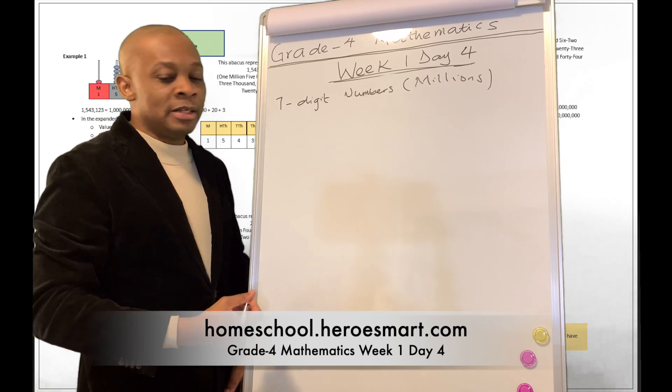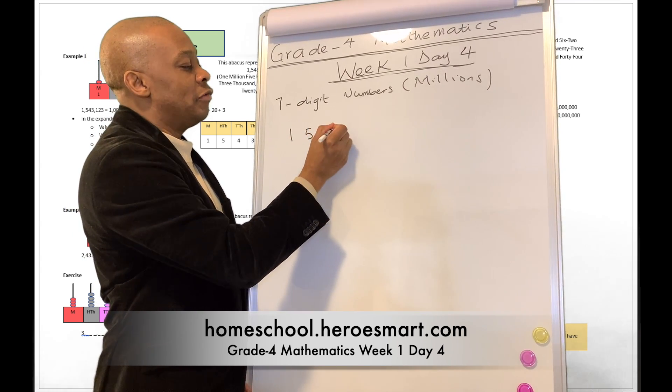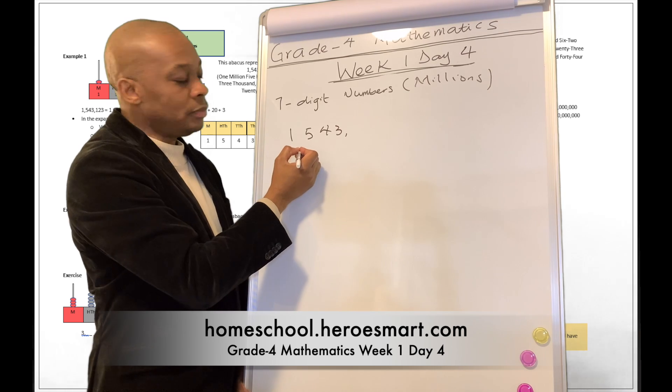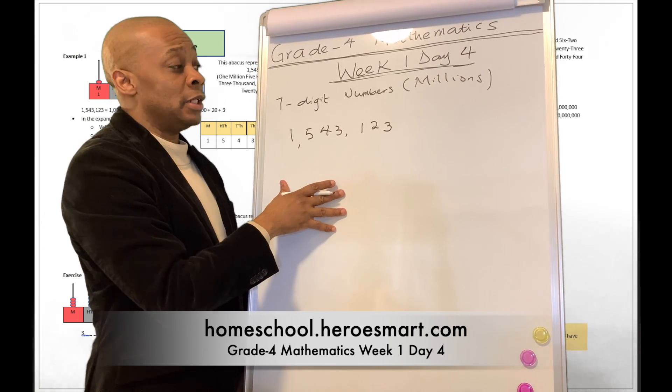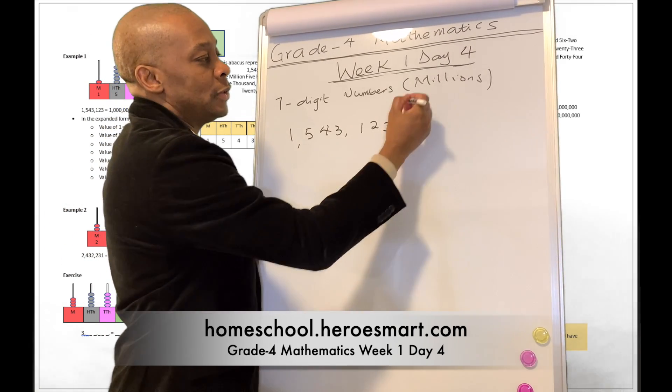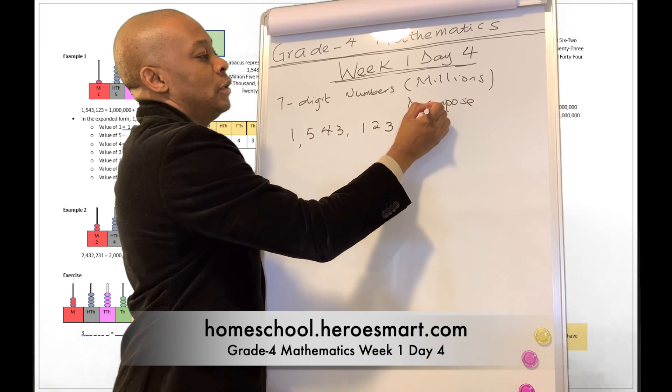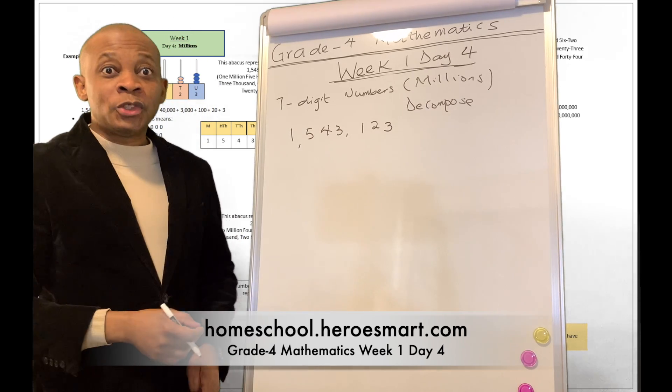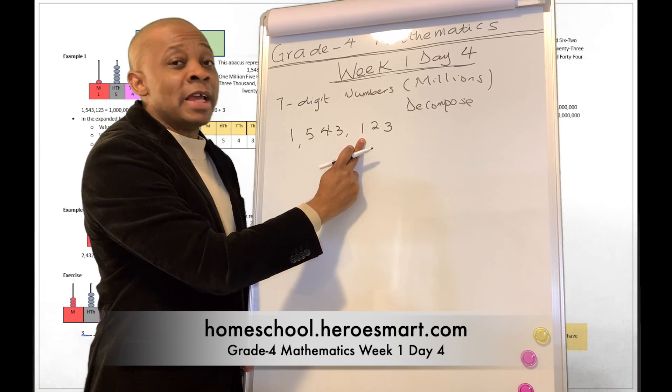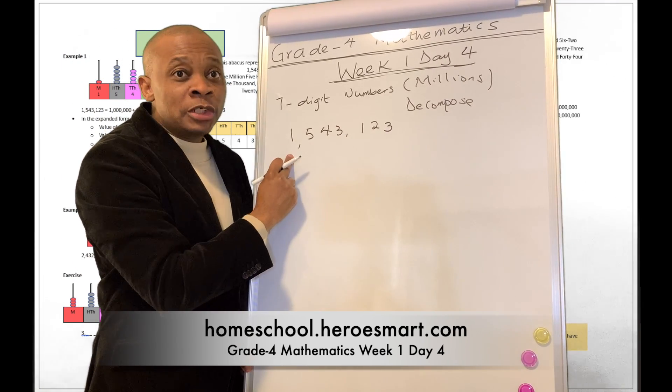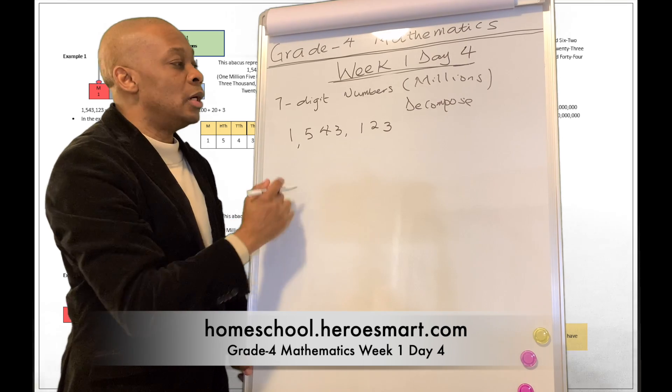What's an example of that number? Well, an example of that number is going to be something like 1,543,123. So try to decompose this number into its place values. Decompose this number into different values that the digits represent. And remember, the one over here is going to have a value. The one over here is going to have a different value. Why? Because they are in different places in this number.